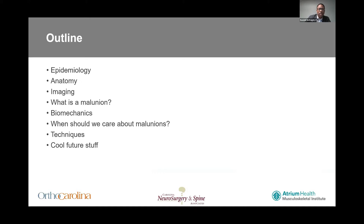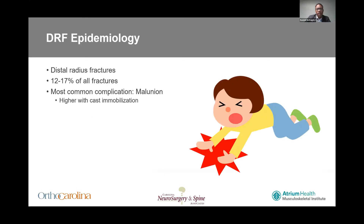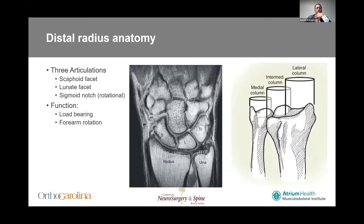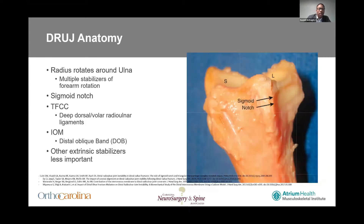Here's an outline of the talk for today. Distal radius fractures are common — they happen to a lot of patients — and the most common complication is going to be malunion, which is higher with cast immobilization as your treatment. When we talk about distal radius anatomy, there are three articulations: the scaphoid and lunate facets, primarily functioning for load bearing, and the sigmoid notch, which makes up the DRUJ for forearm rotation. The radius rotates around the ulna, and the sigmoid notch does not look like a stable joint inherently.